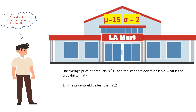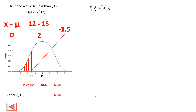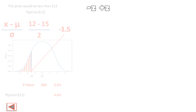After this, you realize you have savings of $6, making your total $18. Now the second problem is: what is the probability that the price would be greater than $18? The thing we want to find is the probability that the price is greater than $18, so we'll follow the same method.